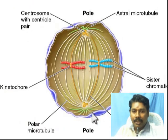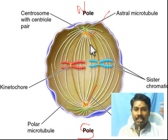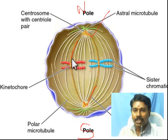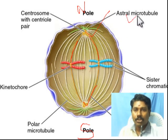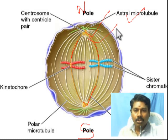During cell division, two centrioles move to opposite poles - one to the north pole and one to the south pole. In cell division, centrioles are responsible for spindle fiber formation. These are the spindle fibers, and these are the chromatids. There are also astral tubules. Centrioles play a very, very important role.